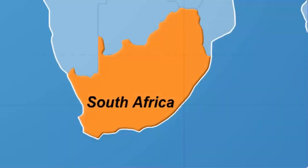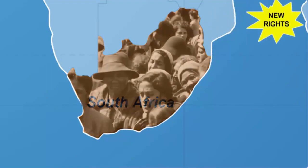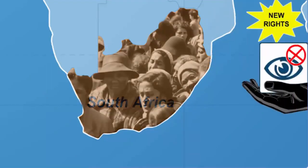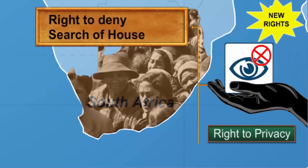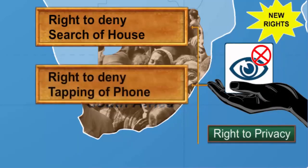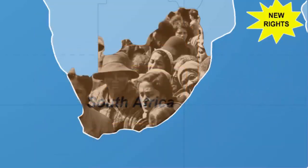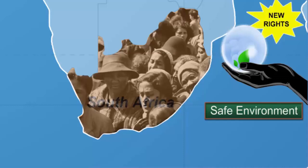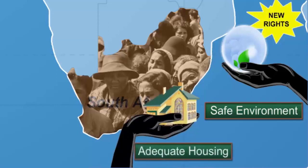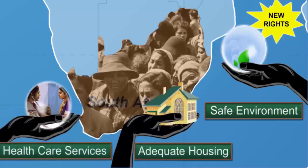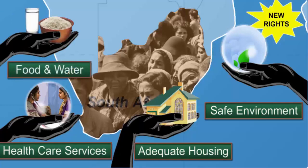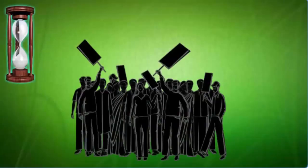The Constitution of South Africa grants several new rights to its citizens, such as the right to privacy, under which citizens have the right to deny their houses being searched, their phones being tapped, or their communication being opened. It also grants the right to a safe environment that is not injurious to their health or well-being, the right to have access to adequate housing, the right to have access to healthcare services and sufficient food and water, with no one being refused emergency medical care. Therefore, the scope and meaning of rights have evolved over the years through the judicial system and the National Human Rights Commission.